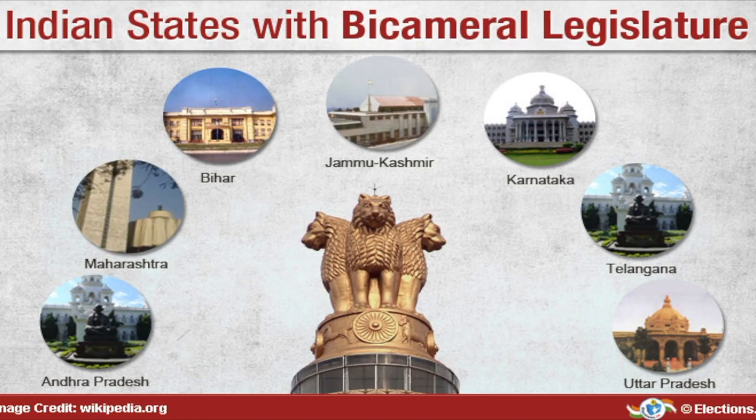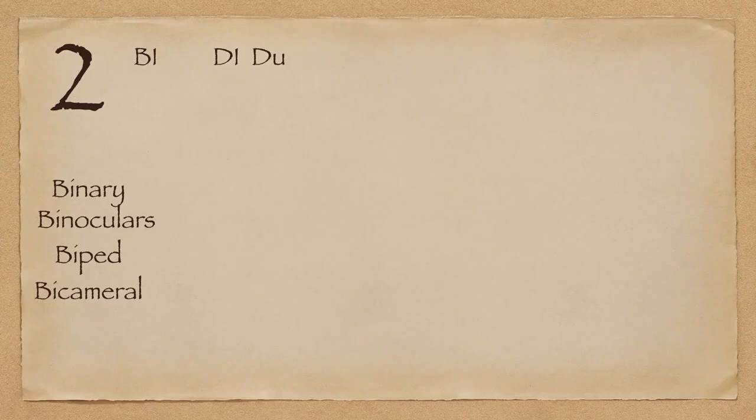Bicameral — bi is two and cameral is chambers. So a bicameral is typically a legislative body made up of two houses. Like our political system, there is a Lok Sabha and an upper house known as the Rajya Sabha. So there are two houses in the overall parliamentary system, and such a system can be called a bicameral system.